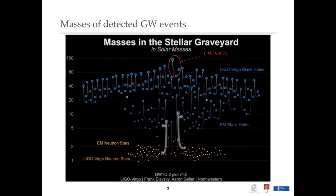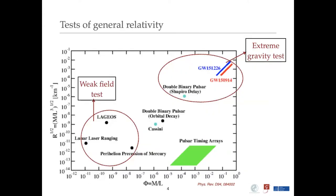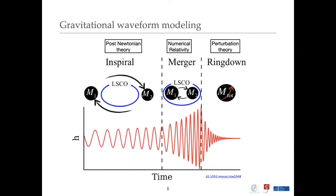This slide shows where gravitational wave events lie in a plane defined by field strength—roughly M over L, where M is the mass and L is the size of the system—and curvature, which is roughly the square root of M over L cubed. The first two gravitational wave events, GW150914 and GW150914, lie in the top right corner, where field strength is maximum and curvature is very strong. Gravitational wave events thus give a wide opportunity to test GR in the extreme field and extreme curvature limit.